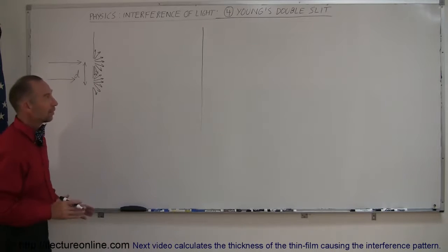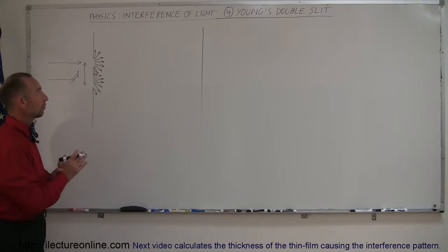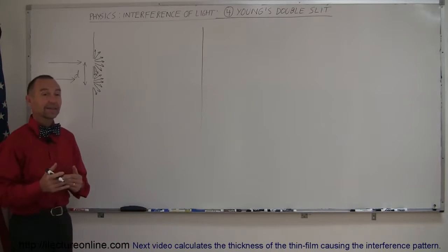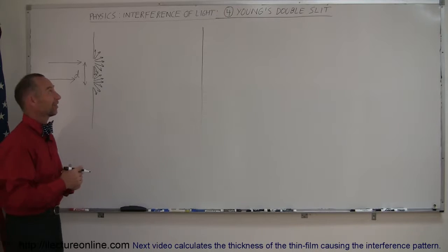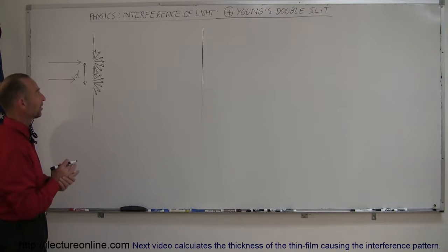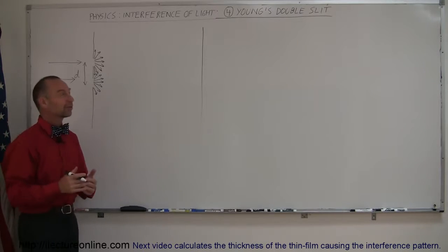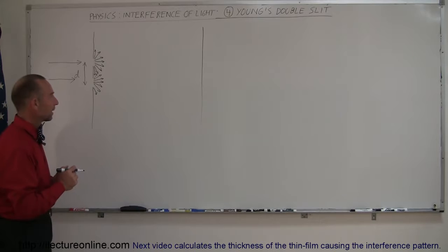Welcome to Electron Line. Here's a very specific case of light interference — light interference for Young's double slit.